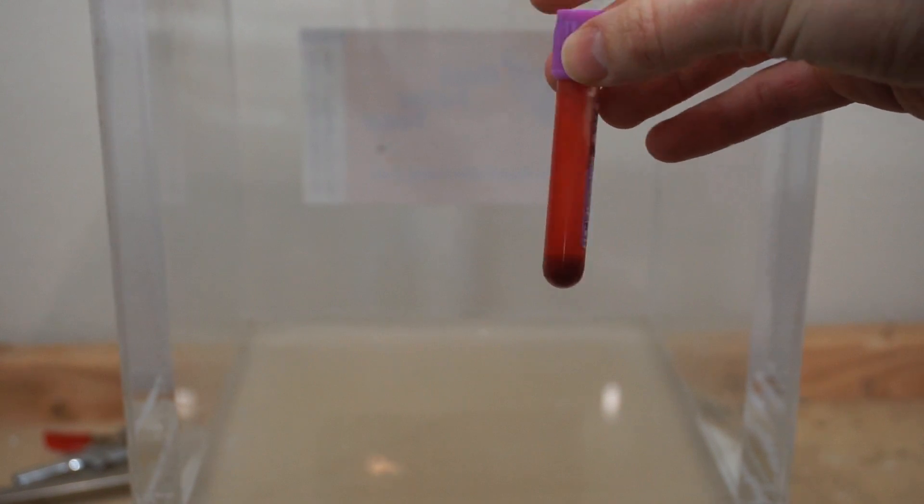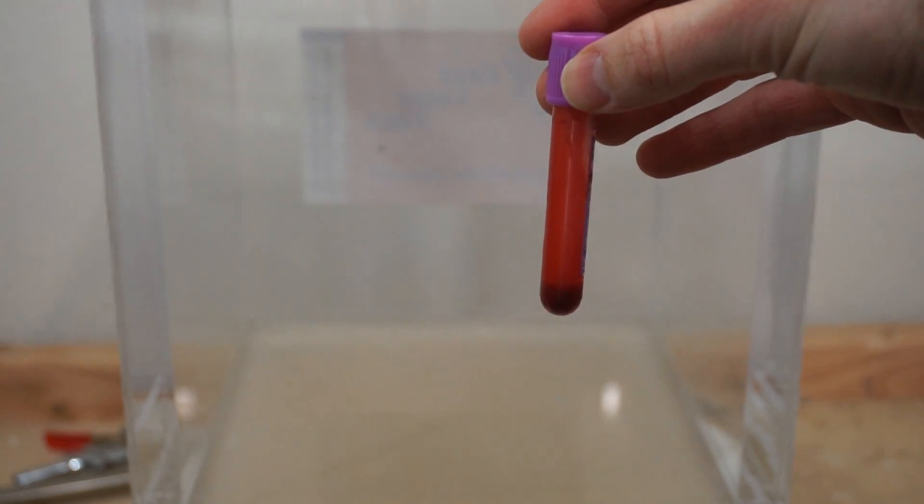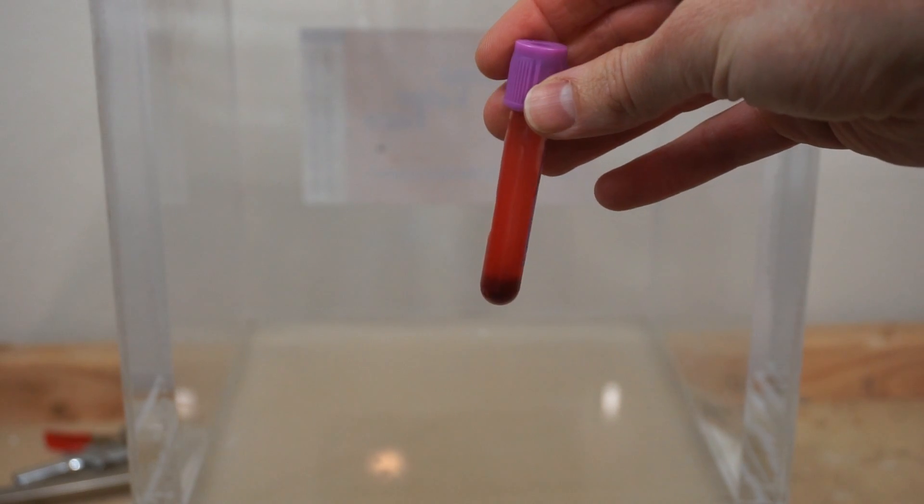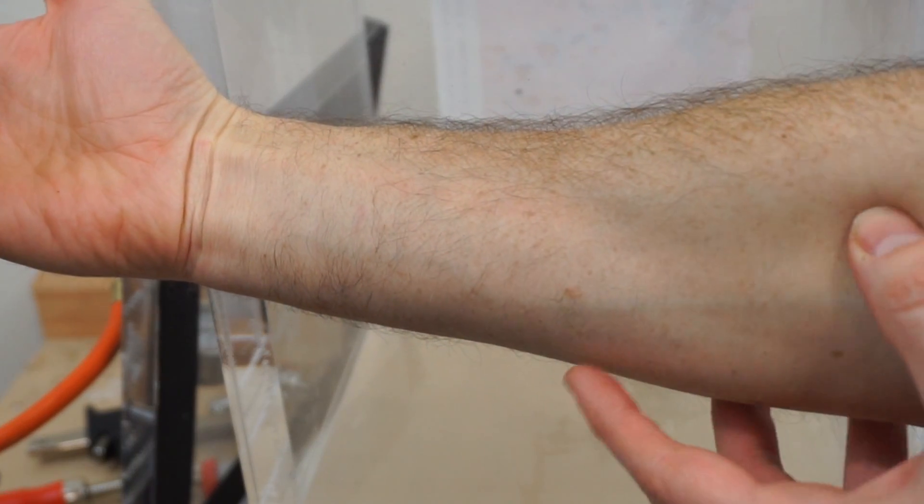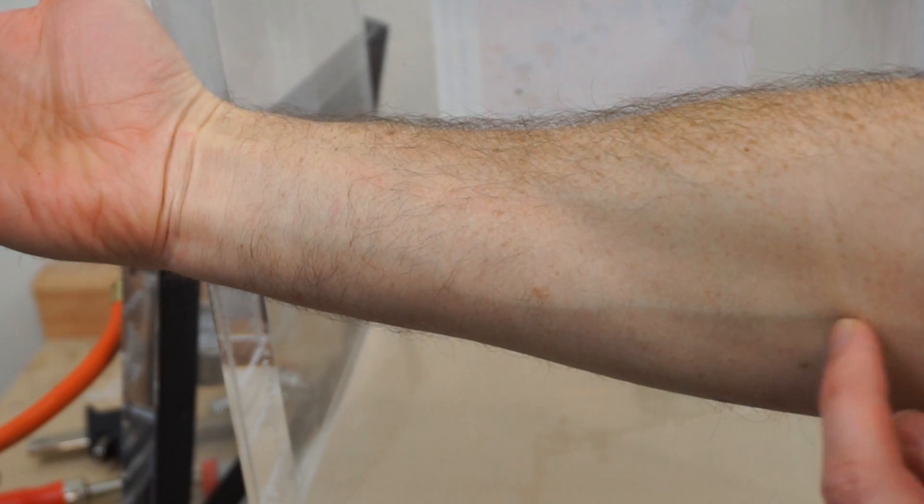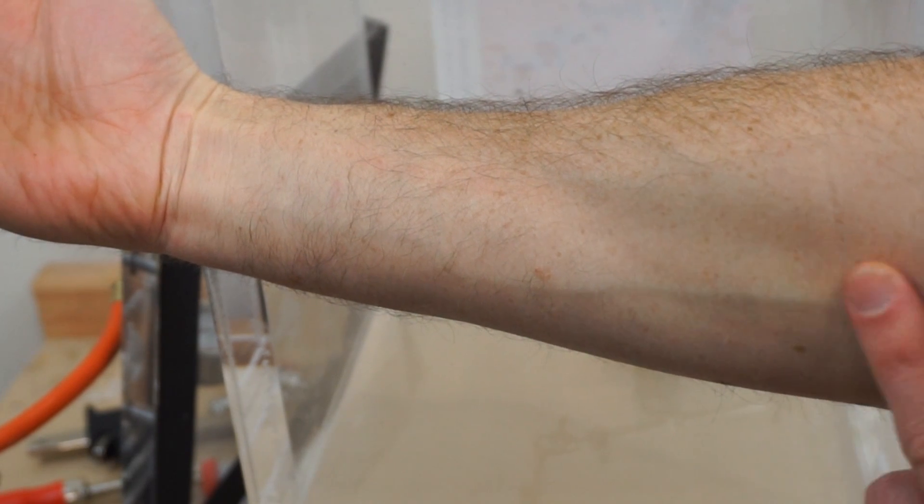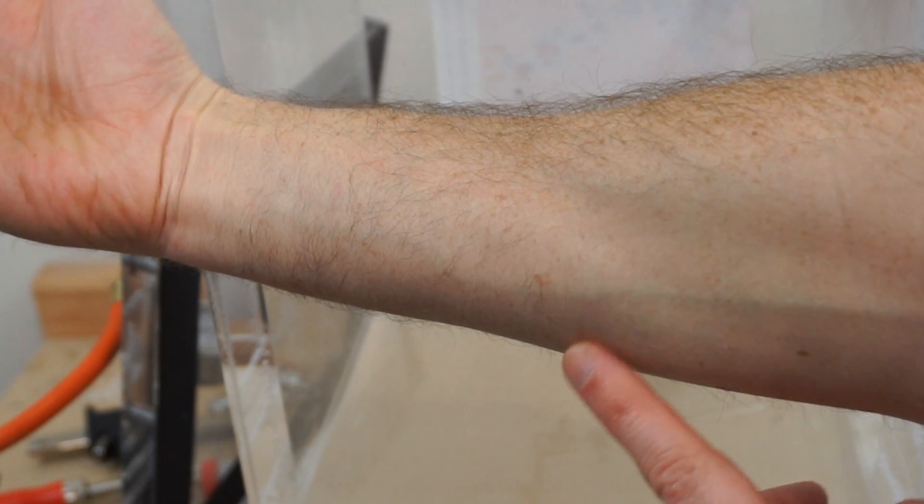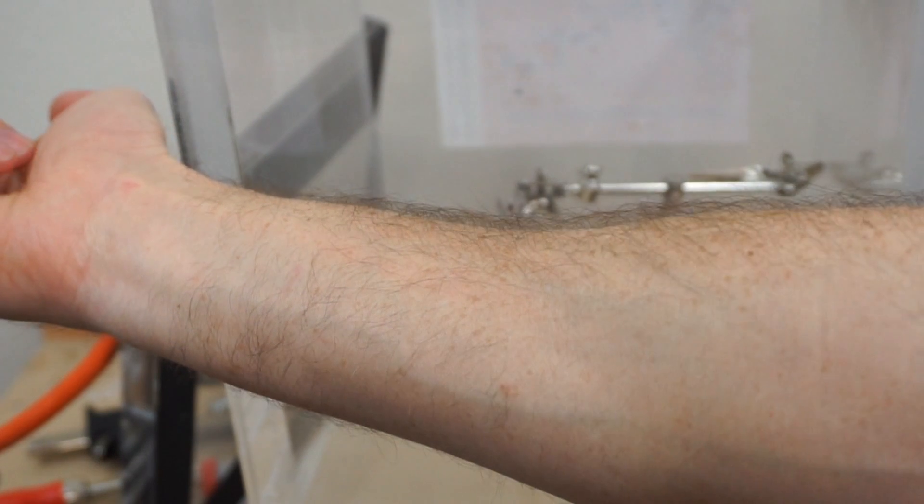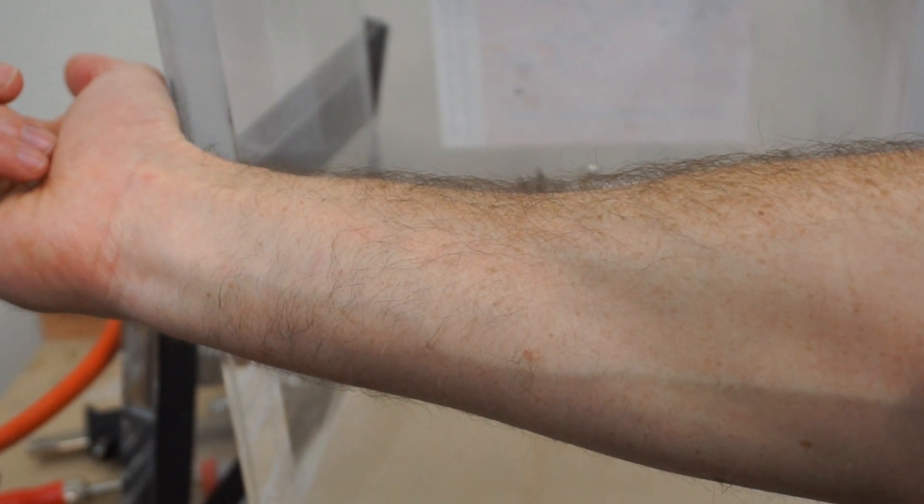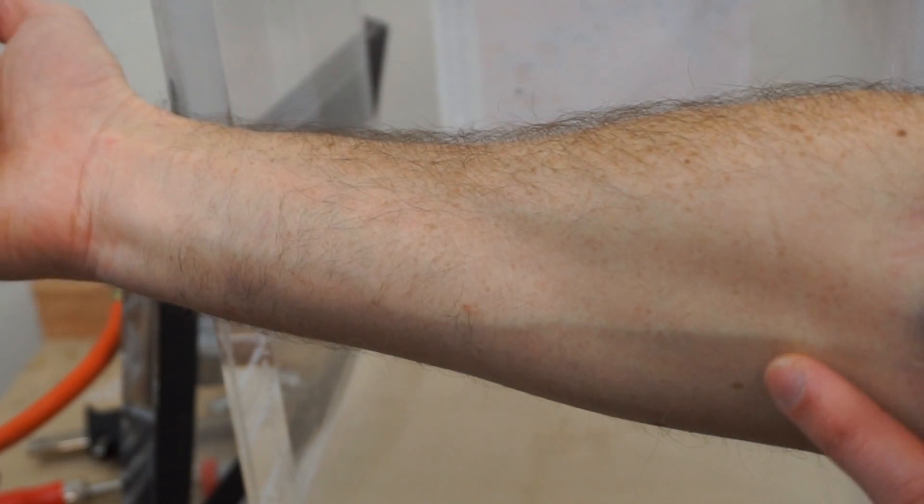Alright, today I'm going to be putting my own blood in the vacuum chamber to see what happens to human blood in a vacuum. I've seen this floating around the internet that your blood is actually blue but when it's exposed to oxygen it turns red. So why don't we test that myth along with the myth of will your blood boil in space and put it in the vacuum chamber.